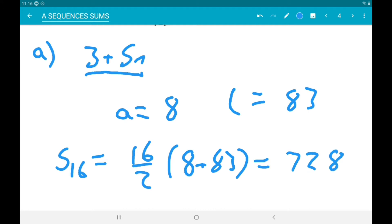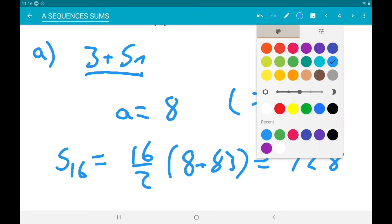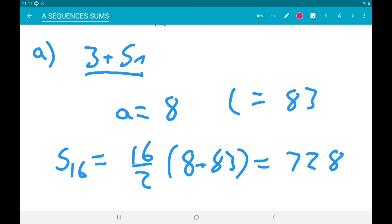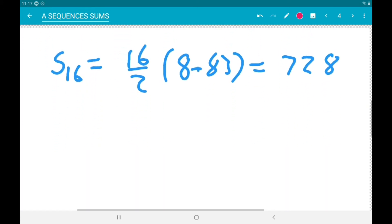Alright, so now we need to do the geometric part, so that's 2 to the n. So for this we need the first term and the common ratio. So a is 2 to the power of 1, so that's 2.